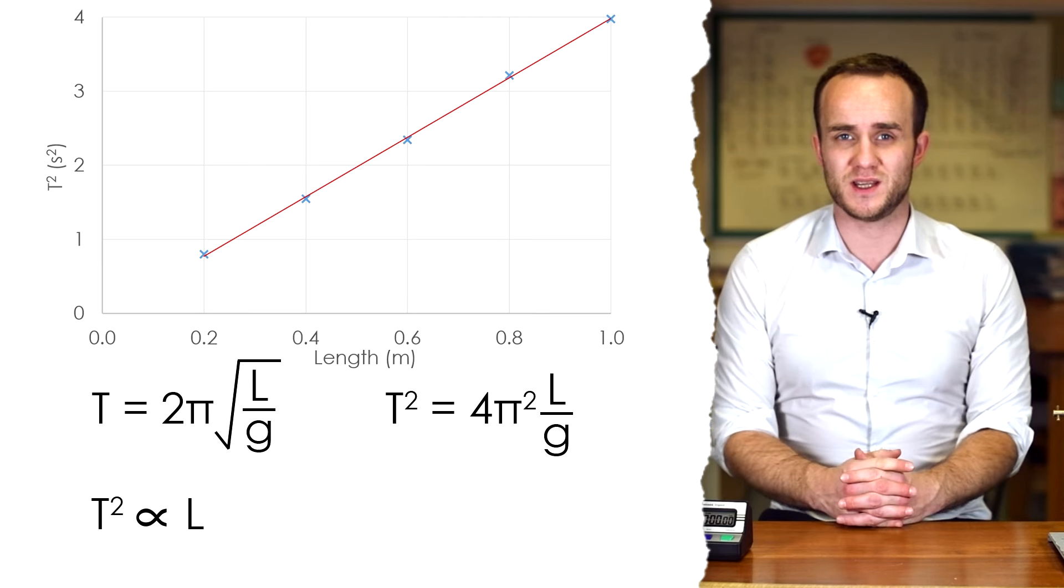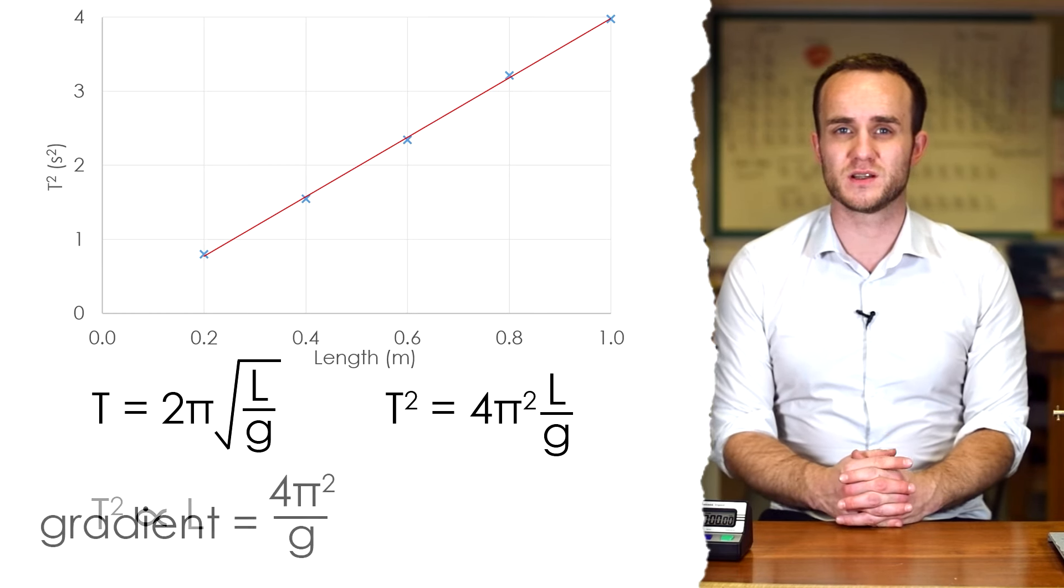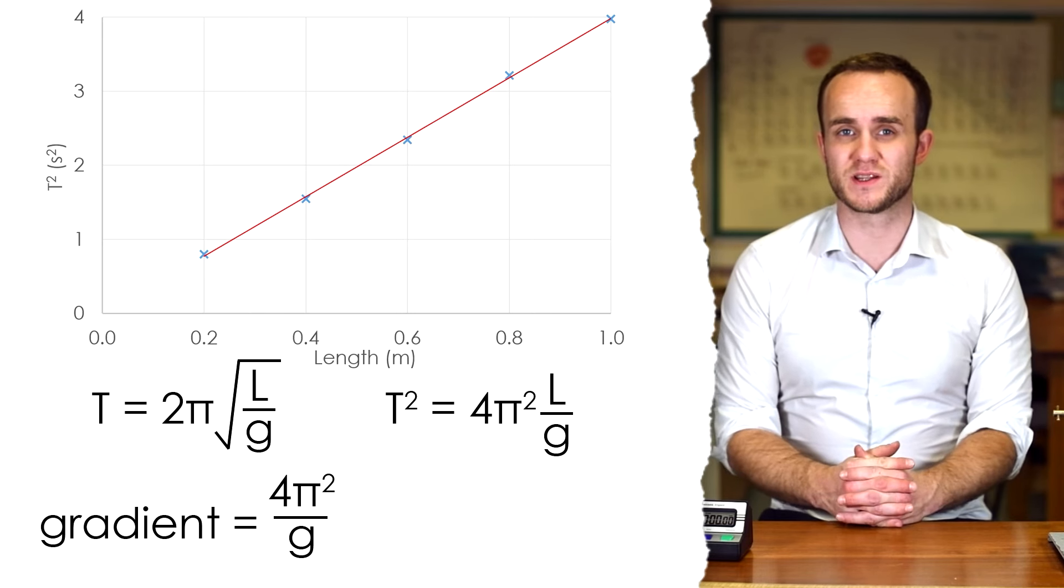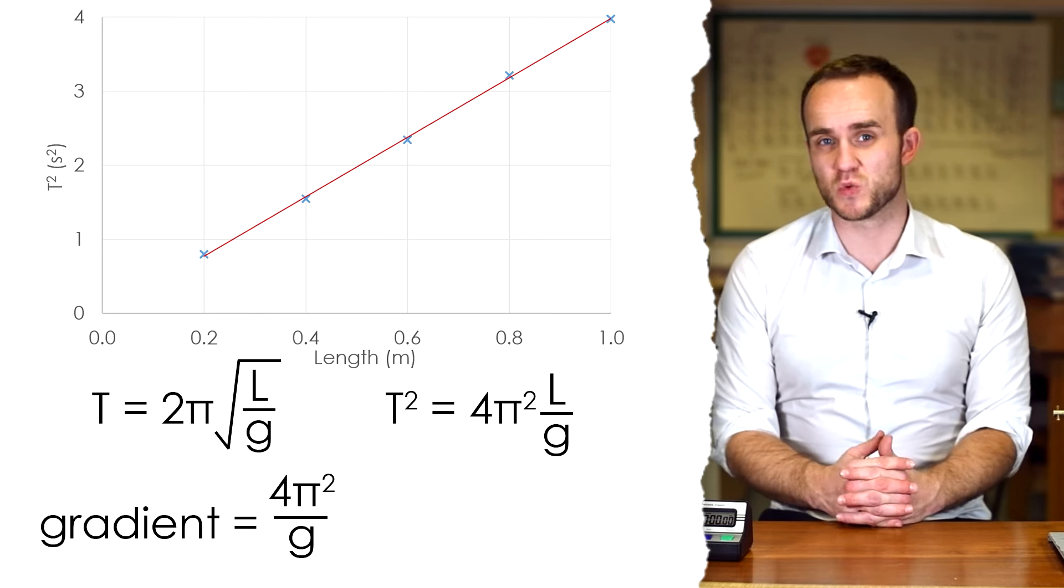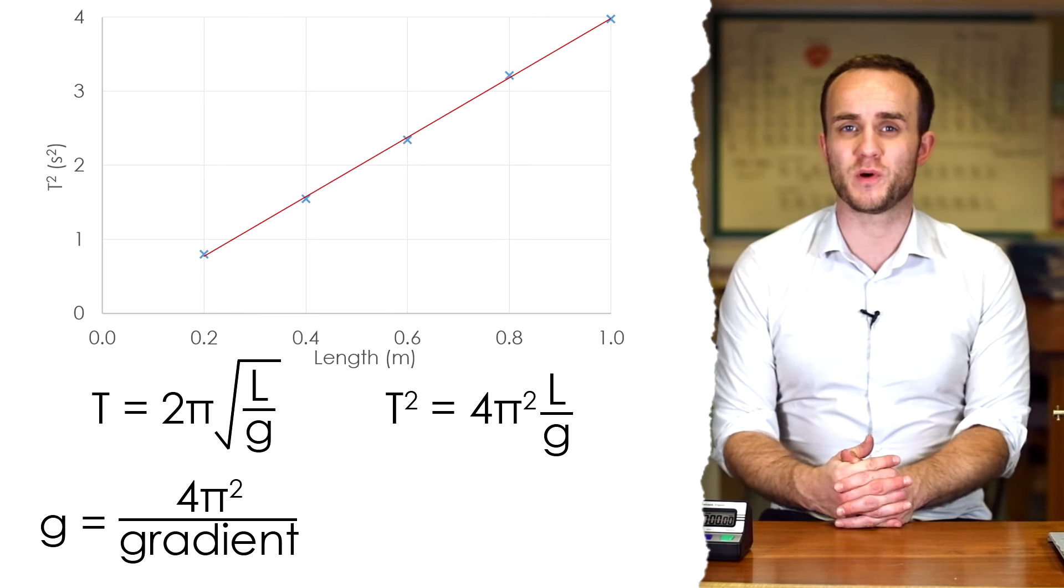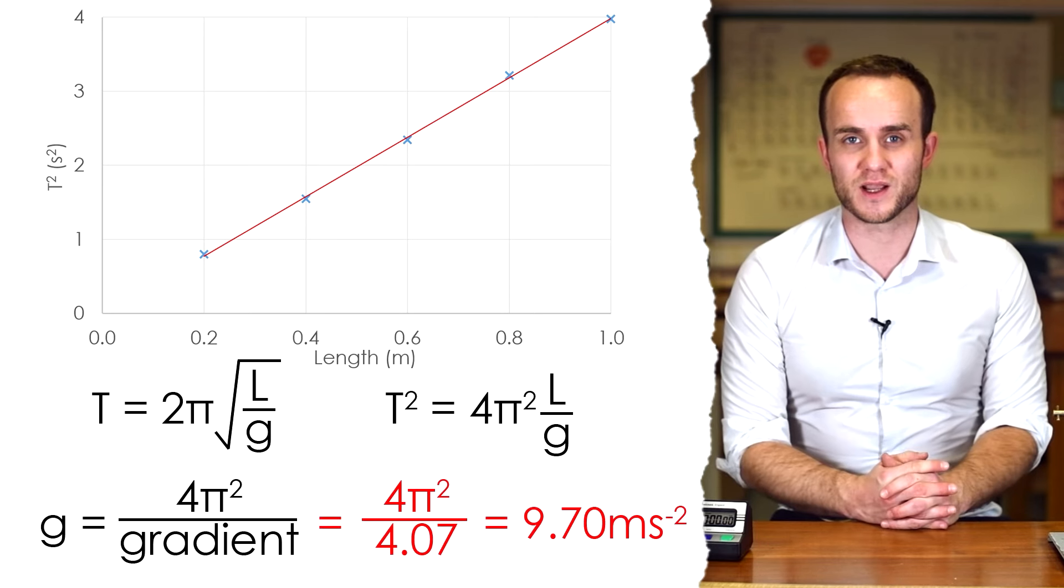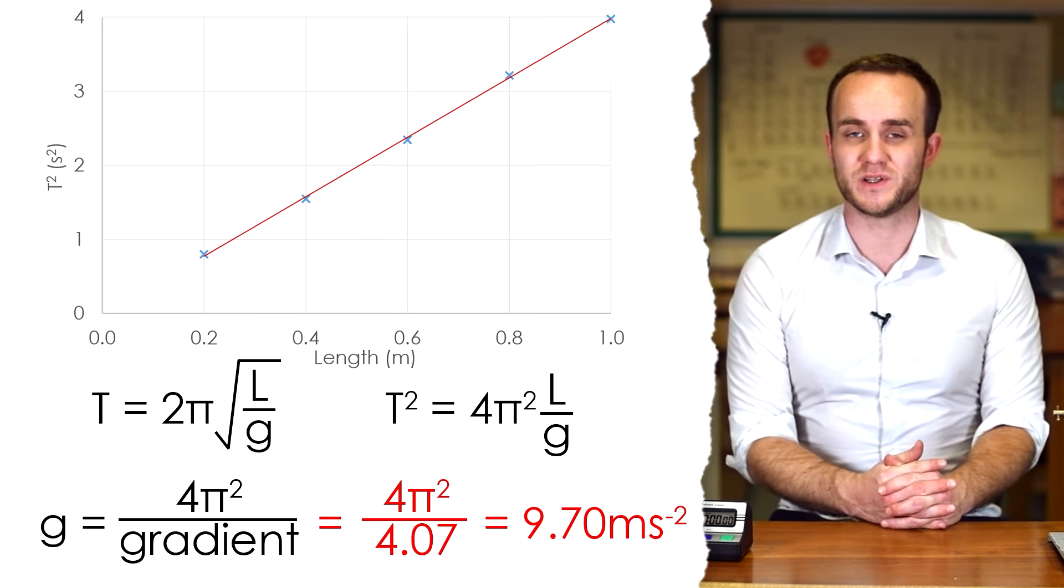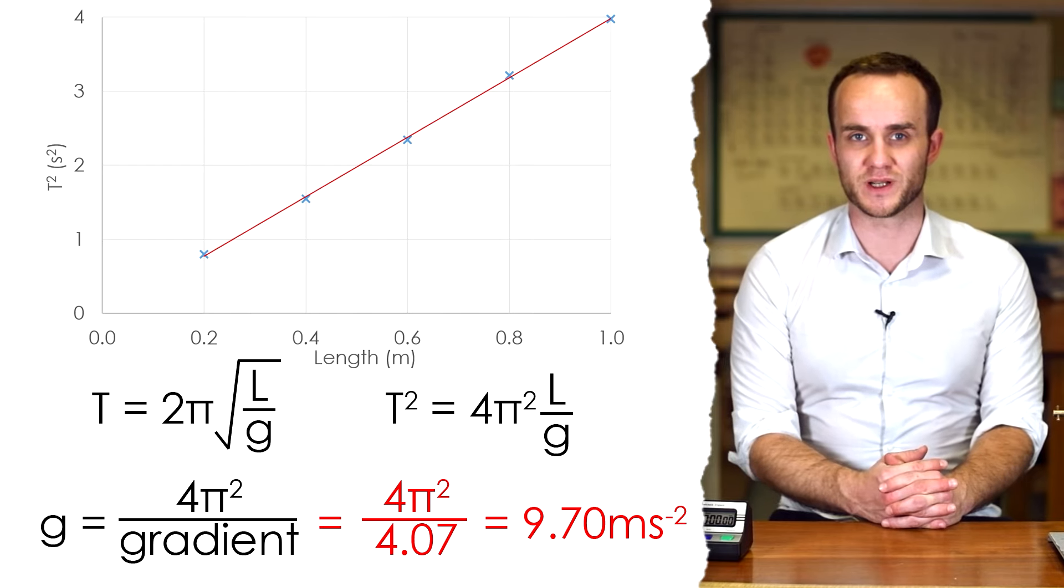Finding the gradient, that is equal to, according to the equation, 4π squared divided by g. So what I can do is verify this relationship by finding g—just swapping gradient and g over, we end up with g equals 4π squared over the gradient. And if I wanted to, I could find out the percentage error in that compared to the accepted 9.81 meters per second squared.